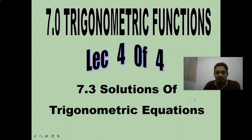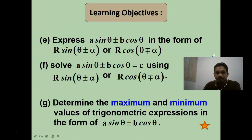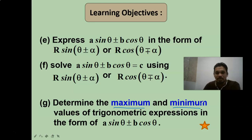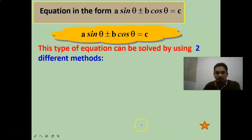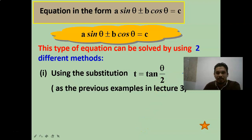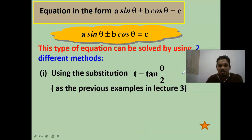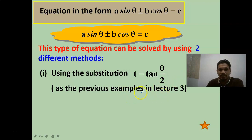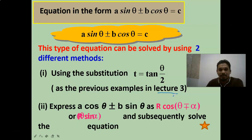I do hope that all of you are ready. In this part we are going to express a·sinθ ± b·cosθ in a specific form, and determine the maximum and minimum values of trigonometric expressions. This type of equation can be solved by two different methods: using the substitution t = tan(θ/2) as in a previous example, or by expressing a·cosθ ± b·sinθ as R·sin(θ ± α) or R·cos(θ ± α).